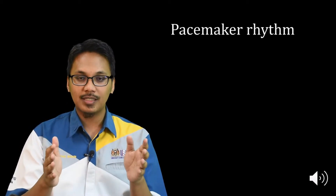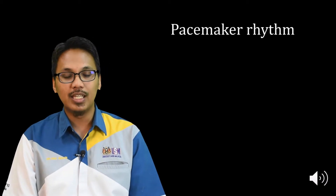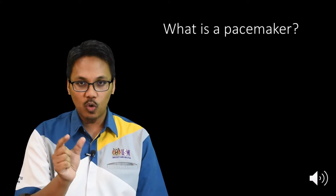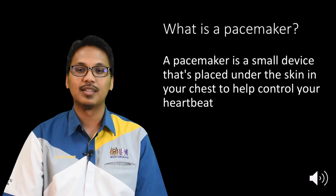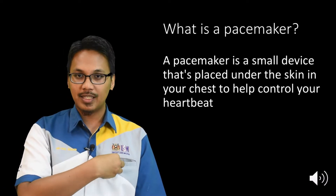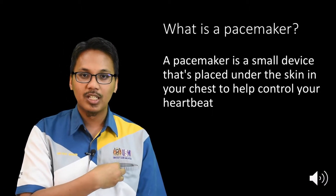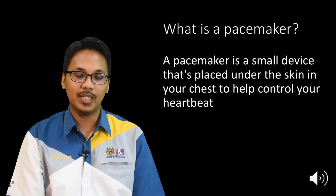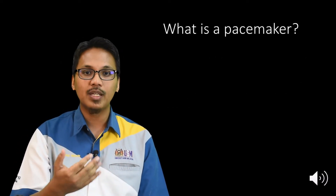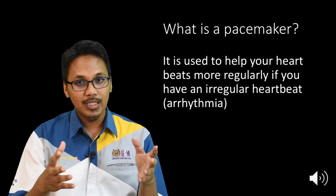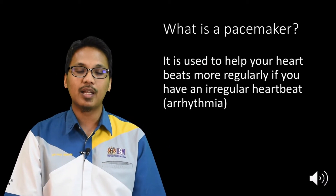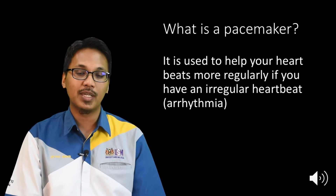The first topic will be our pacemaker rhythm. Before we go further into discussing the ECG changes in a pacemaker rhythm, a little bit on what a pacemaker is. A pacemaker is a small device that is placed under the skin in your chest to help control your heartbeat. It is used to help your heartbeat be more regular if you have an irregular heartbeat, or what we call in medical terms, arrhythmia.